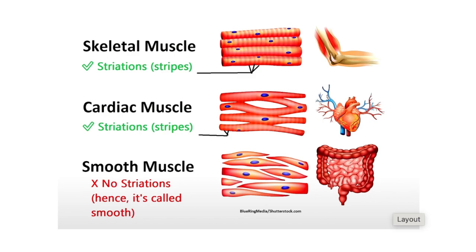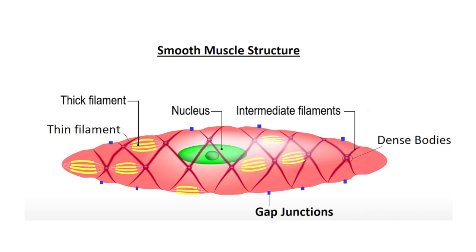Jumping into the structural side of things, let's take a look at this diagram. Smooth muscle does not contain sarcomeres — the organized contractile units found in both cardiac and skeletal muscle — nor do they contain myofibrils, which are rod-like structures made up of repeating segments of sarcomeres. Because smooth muscle lacks both of those things, it does not contain striations, or that striped pattern that characterizes skeletal and cardiac muscles. That's actually why we call it smooth muscle. Although smooth muscle lacks sarcomeres, it does contain thick myosin filaments and thin actin filaments that work to contract the muscle fiber via a sliding filament mechanism, dispersed throughout the cytoplasm of the cell.